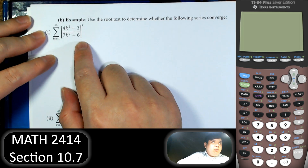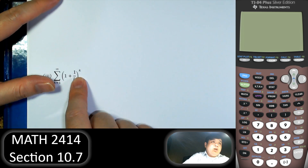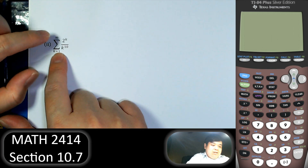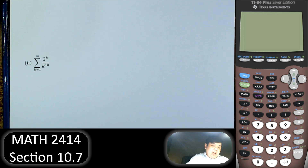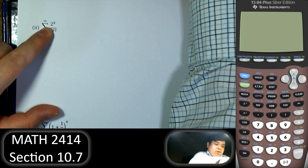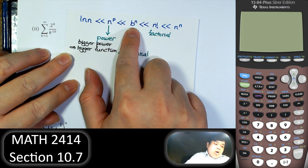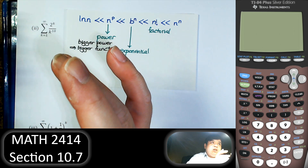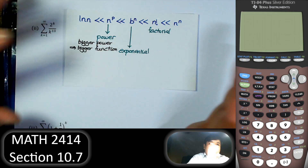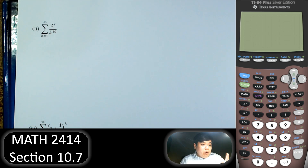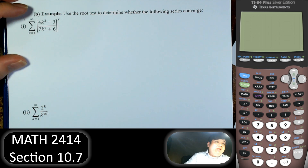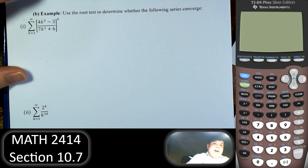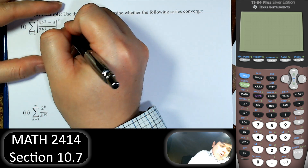The root test is helpful when the whole term is raised to the k-th exponent, because the k-th root and the k-th power cancel out. When we see a problem where everything is to the power of k, that's when we use the root test. Though I would argue the ratio test is also quite effective on many of these.